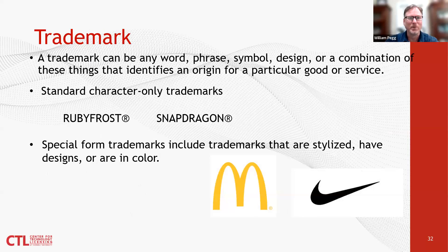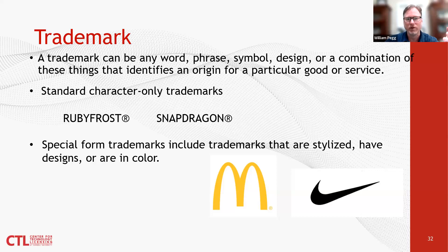A trademark is any word, phrase, symbol, design, or combination that identifies the origin of a particular good or service — meaning the manufacturer producing it. There are standard word trademarks such as Ruby Frost or Snapdragon, which are Cornell marks; if that word appears in any font or color, it's still an infringement for a defined protected good or service. There are also special form trademarks — logos — which can be a shape, color, or combination of words with a logo.